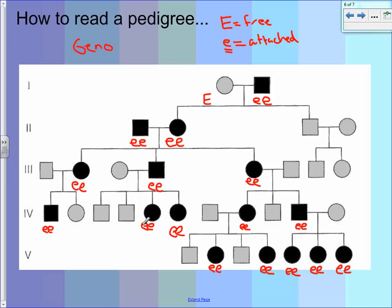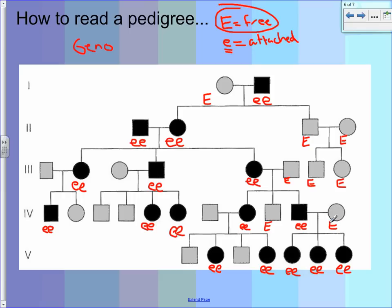The second thing you should do is give everybody who's not shaded in one dominant allele, because we know that in order to have the dominant phenotype, they have to have at least one capital E. So go through and give everybody a big E. Then we can go through the process of trying to figure out what their other letter is. In order to know what the second letter is, we have to look at their offspring.